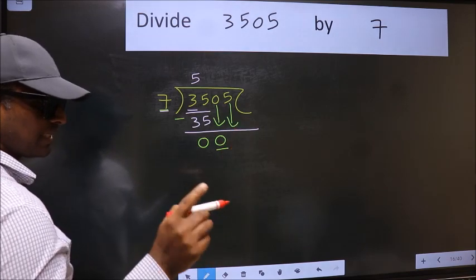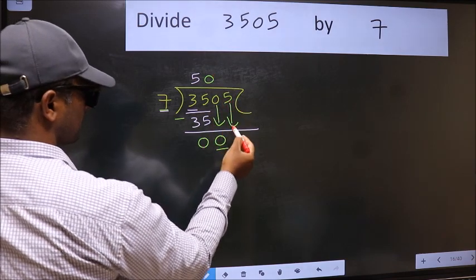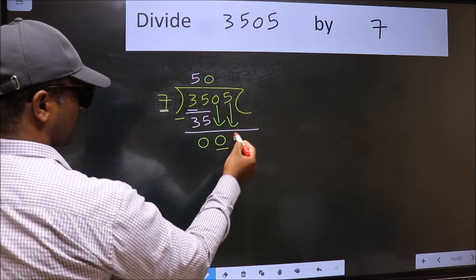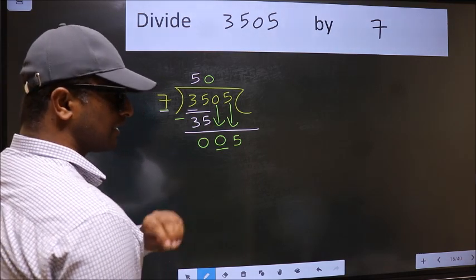So we should bring down the second number. And the rule to bring down the second number is we should put 0 here. Then only we can bring this number down. After this step, the mistake happens.